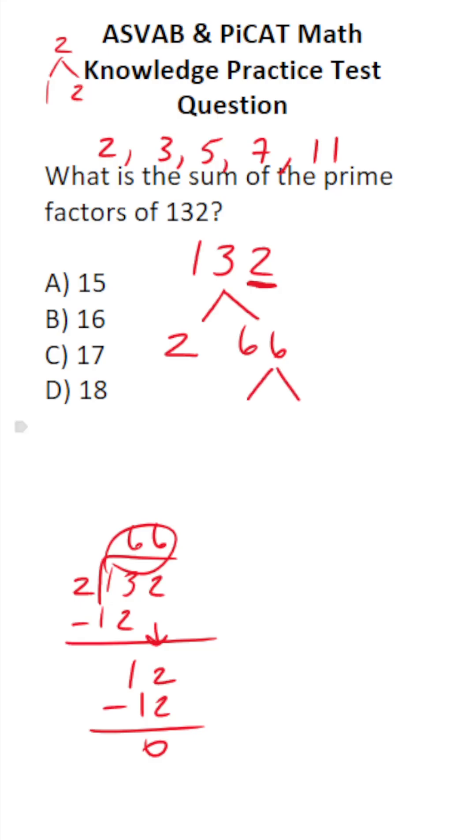All right, let's keep breaking this one down. Again, you should recognize that 11 times 6 is 66 and 11 is prime. So let's keep breaking this down. 3 times 2 is 6.